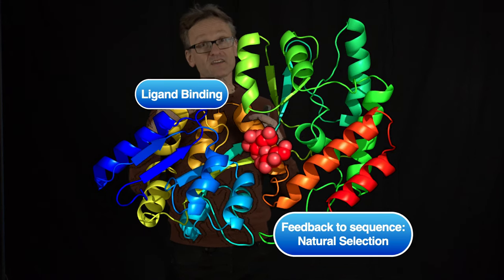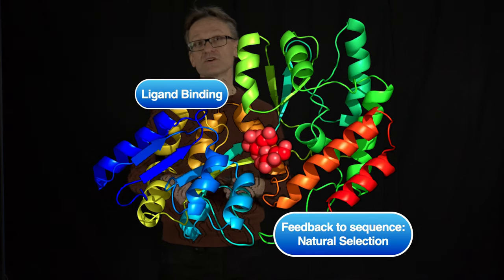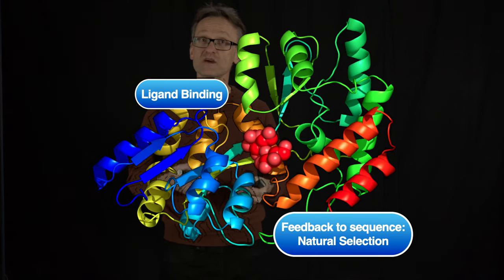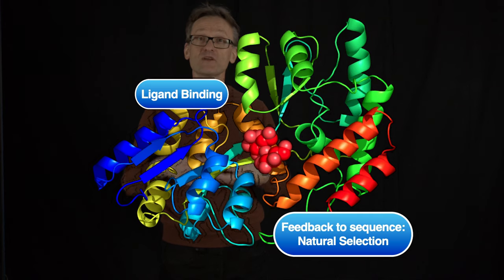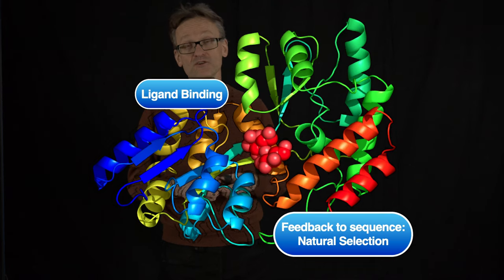And if I get a change in function, that's then going to have this feedback loop. Because if a particular function makes me more likely to survive, I'm going to have more offspring, and that means that this variation will be more common, at least after a few billion years.